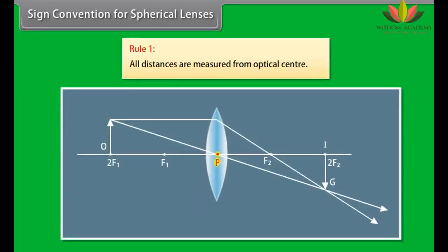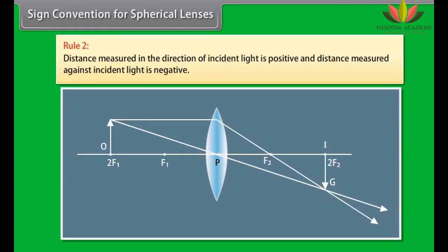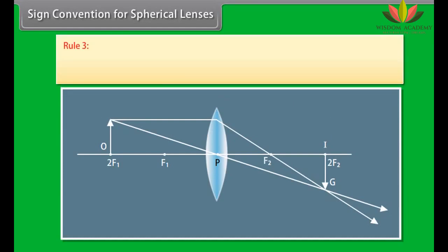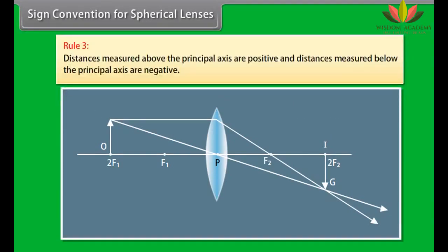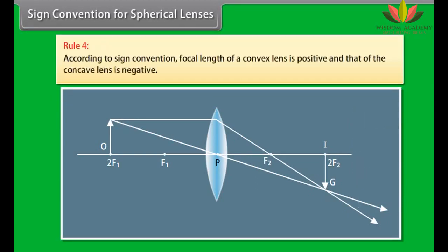Sign convention for spherical lenses: Rule 1 — all distances are measured from the optical center. Rule 2 — distance measured in the direction of incident light is positive; against incident light is negative. Rule 3 — distances above the principal axis are positive; below are negative. Rule 4 — the focal length of a convex lens is positive and that of a concave lens is negative.